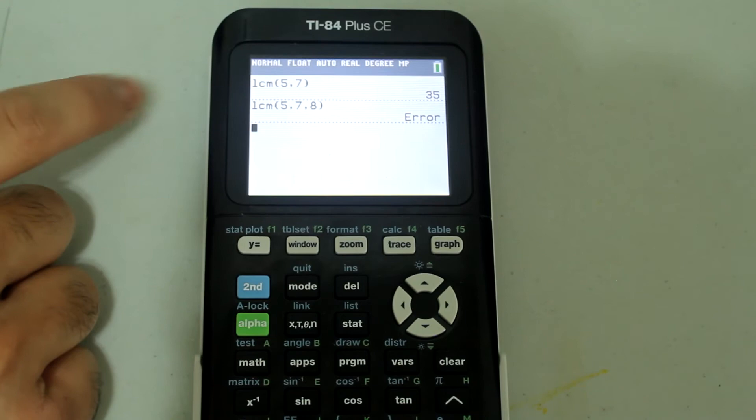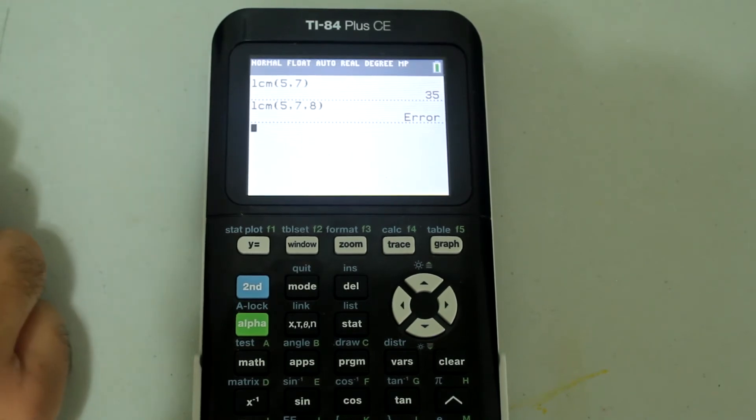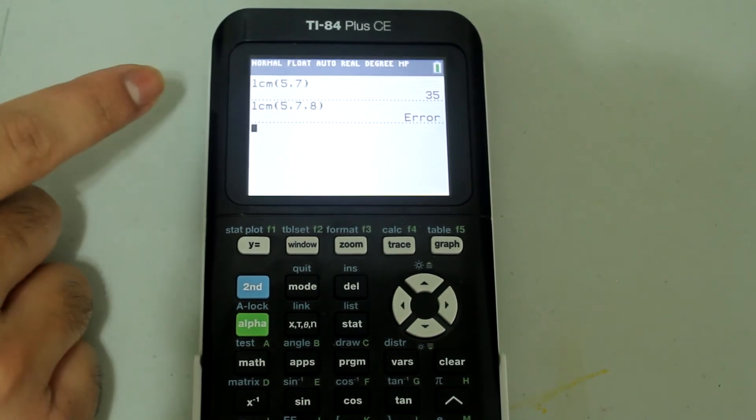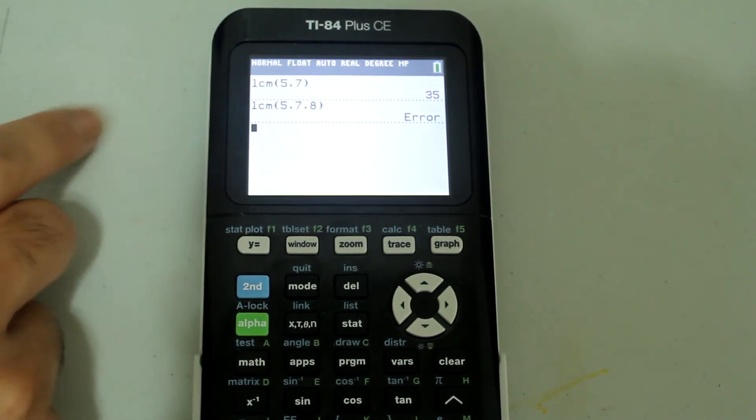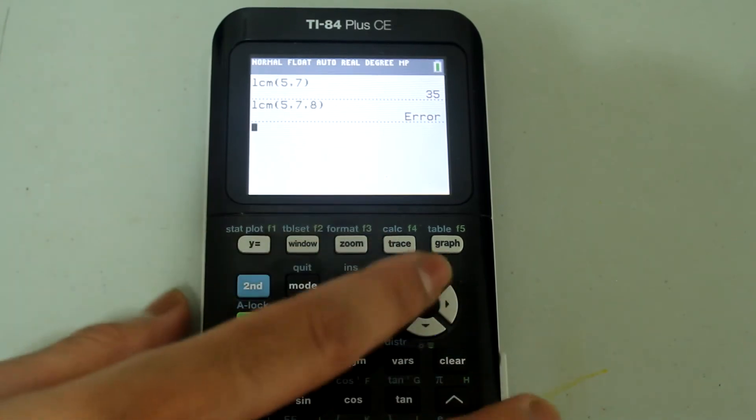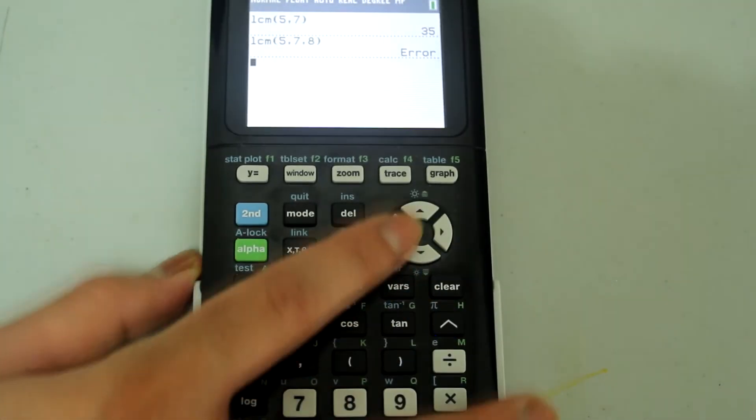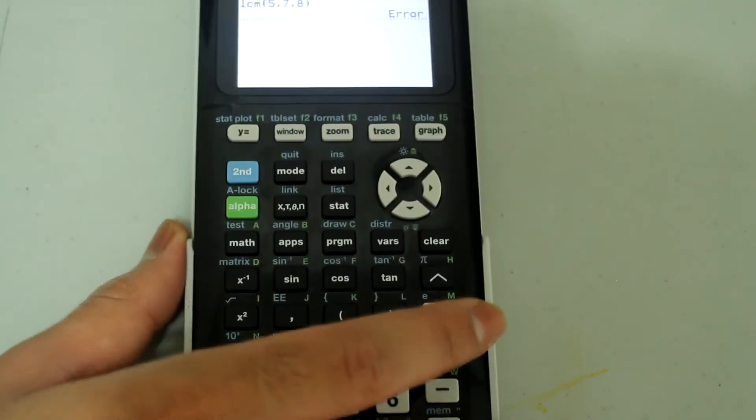If I want to find the least common multiple for more than three numbers, what I have to do is use more than one LCM command. So what I'm going to do is open an LCM command. I'm going to select the top one and press enter.